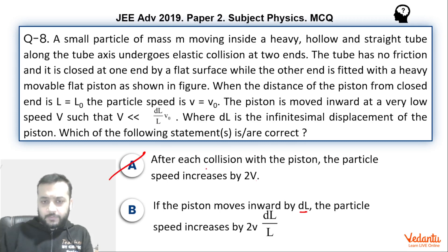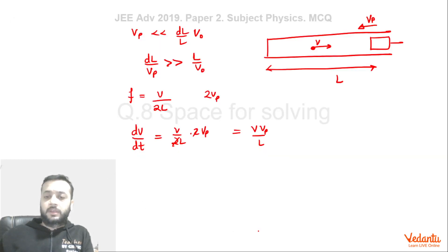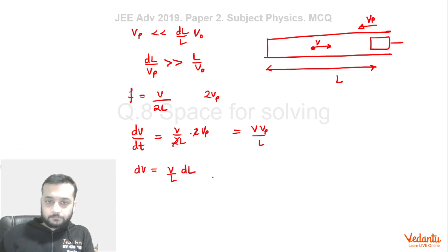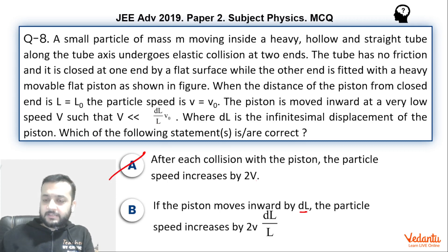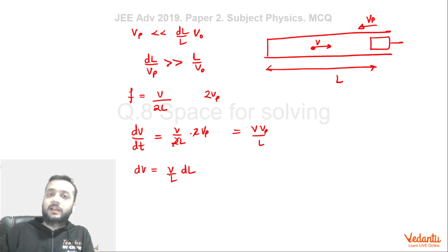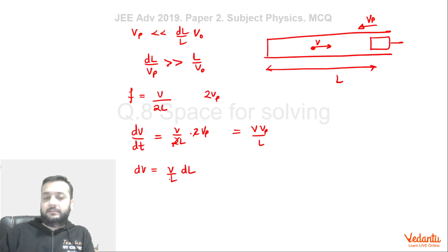Before going further, let's check Option B: if the piston moves by distance dl, the particle speed increases by 2v·(dl/l). From our rate equation, dv = (v·vp/l)·dt. Since the piston speed vp = dl/dt, we can write vp·dt = dl, giving dv = (v/l)·dl. The increase is v·dl/l, not 2v·dl/l, so Option B is incorrect.